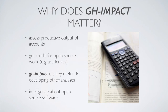Why does this number matter in the first place? Just like bibliometrics in academia, this is a number that helps to assess the productive output of an account. And like in academia, this number can help authors get credit for the open source work that they do. GH Impact is also an important number that I have built into analyses going in many directions in open source analysis, and the net effect is that we now have a lot of intelligence about the open source software industry in general.